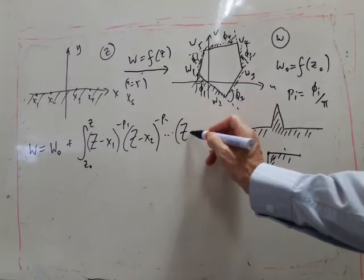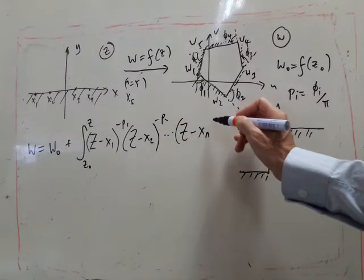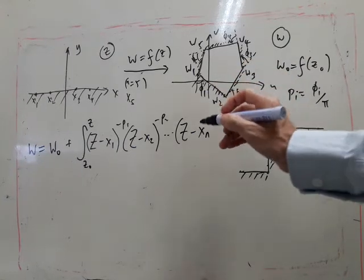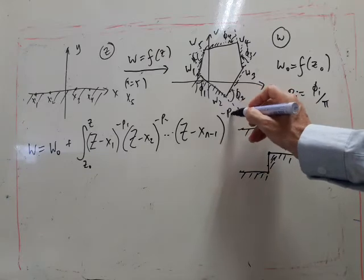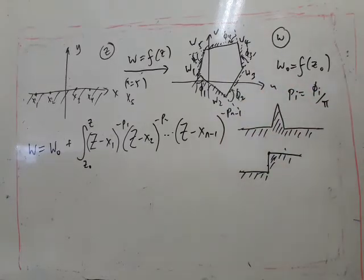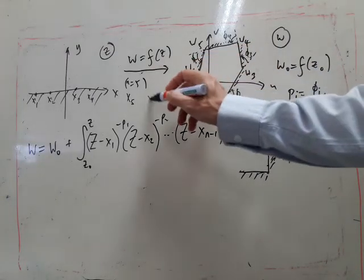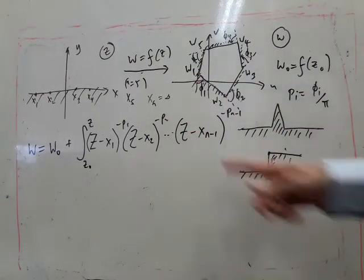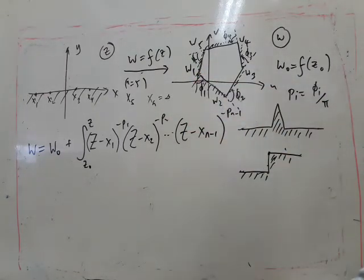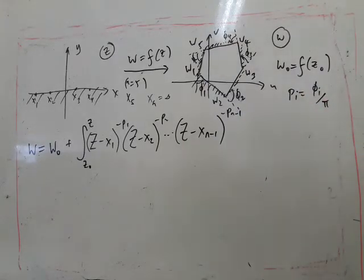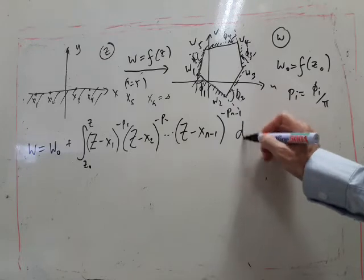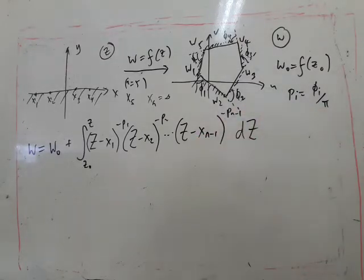Obviously we couldn't have x_n here because x_n is always infinity, so we normally choose x_n to be the point at infinity, so we can't possibly have an x_n in the formula. Okay, and then we're done. That's the integral when we integrate with respect to big Z. So big Z is a dummy variable of integration.